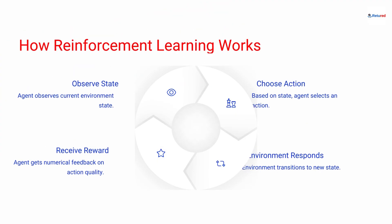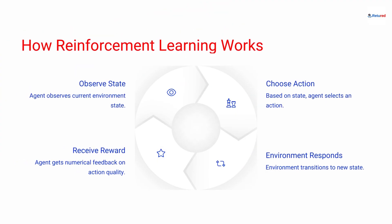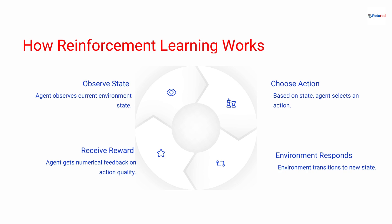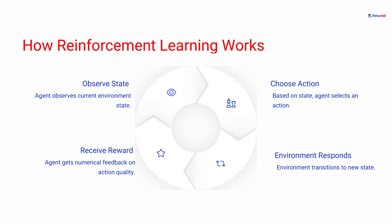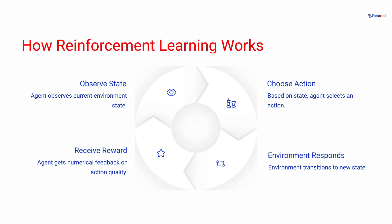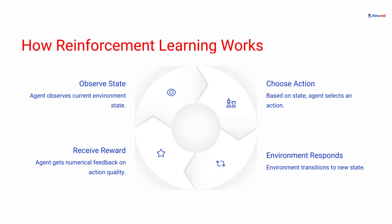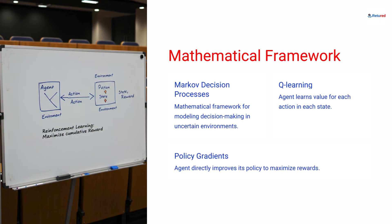So, how does it work? In reinforcement learning, the agent observes its environment, selects an action, and the environment then transitions to a new state while providing a reward or penalty. This continuous cycle of observation, action, and feedback drives the learning process. This learning process is formalized using Markov decision processes. Techniques like Q-learning help the agent estimate the value of each action in a given state, while policy gradients directly improve the strategy. These mathematical frameworks give structure to the trial and error learning process.